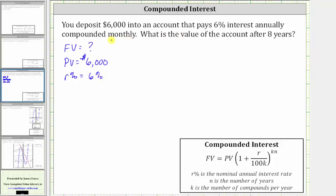The interest is compounded monthly, and since there are 12 months per year, K, the number of compounds per year, is 12, and the number of years is 8.